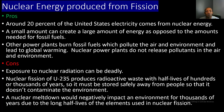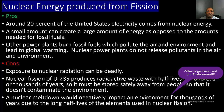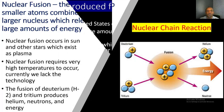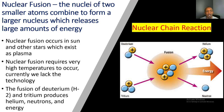Even though nuclear fission is a cleaner source of energy than fossil fuels, if it were ever to leak or get out it could impact our environment for hundreds of thousands of years, so we must take very proper care of it. Nuclear fusion is when the nuclei of two smaller atoms combine to form a larger nucleus, releasing large amounts of energy. Nuclear fusion occurs in the sun and other stars, which exist as plasma, and requires very high temperatures to occur — temperatures we currently lack the technology to recreate.